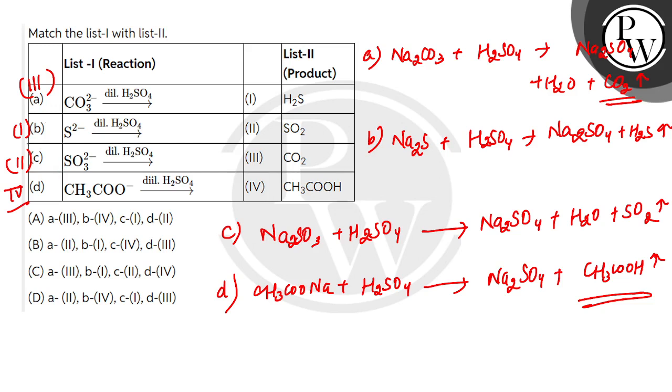D, correct match: 3, 1, 2, 4. So C option is correct. Rest options are incorrect. I hope you understood. Thank you.